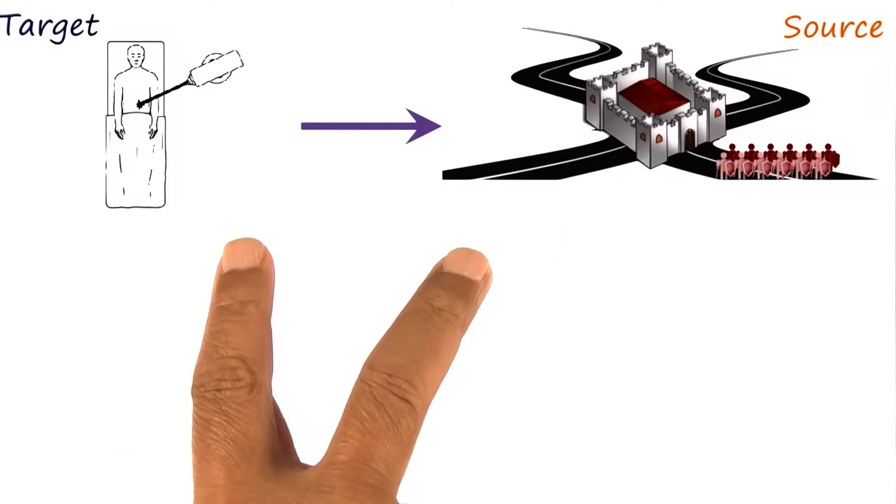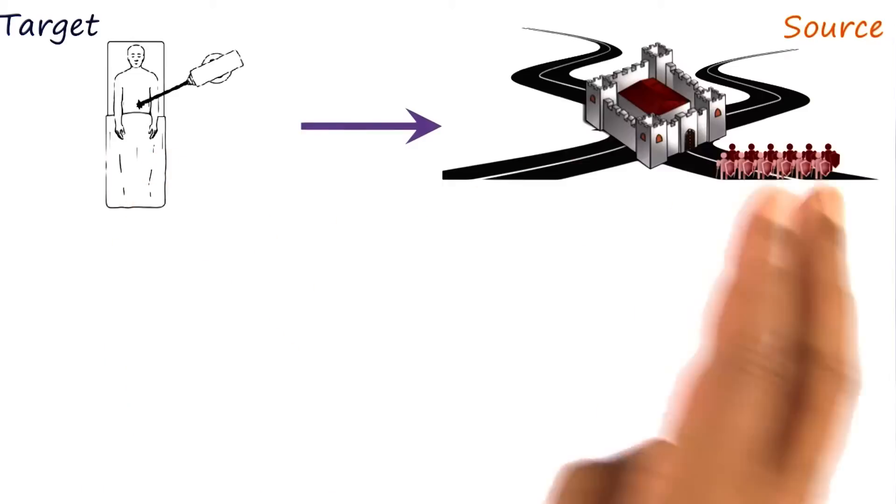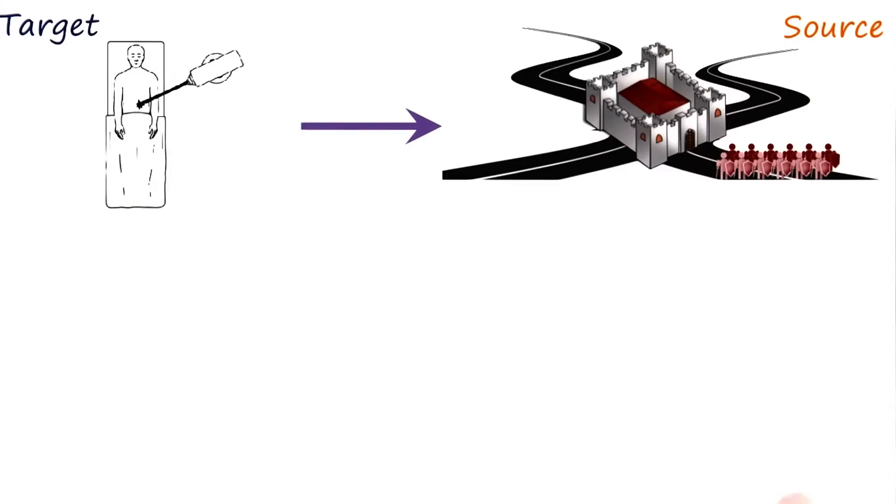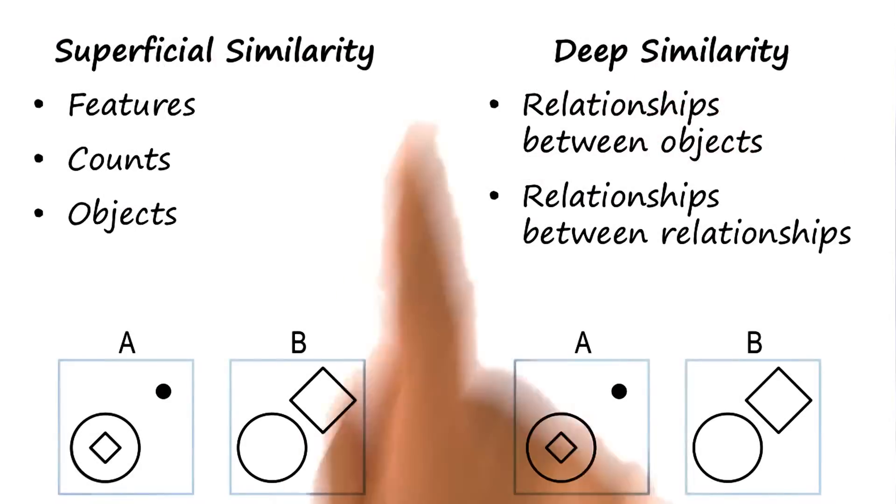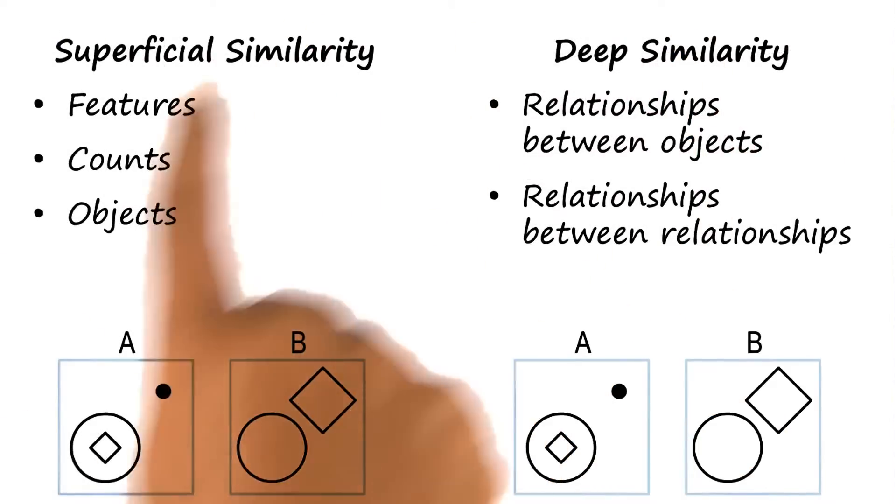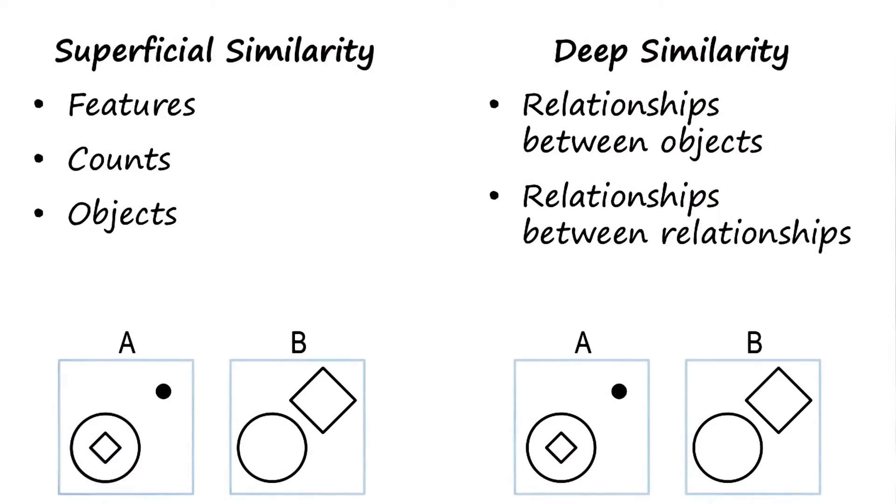On surface, there seems to be little similar between the two. None of the objects are similar, none of the values or features are similar. Yet, there is a deep similarity there. We can distinguish now between superficial similarity between two situations, and deep similarity between two situations.